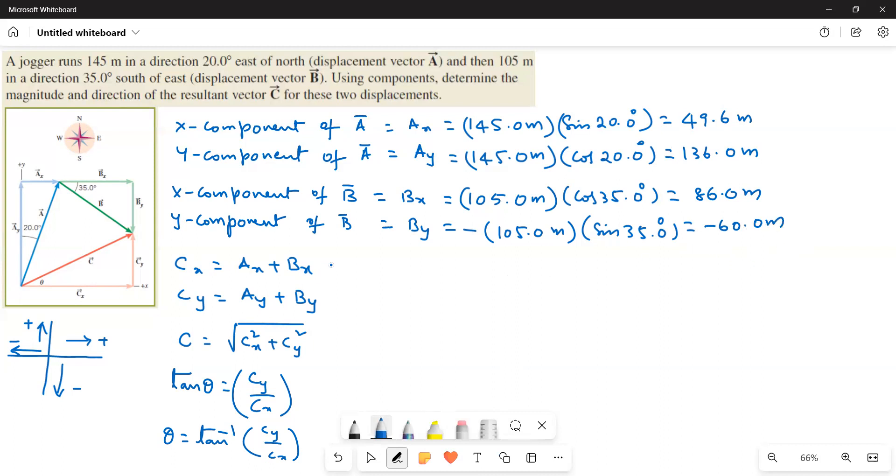Now what we have to do is we have to add them. So 49.6 plus 86 gives a value of 135.6 meters. And then Ay and By, 136 minus 60 is equal to 76 meters.